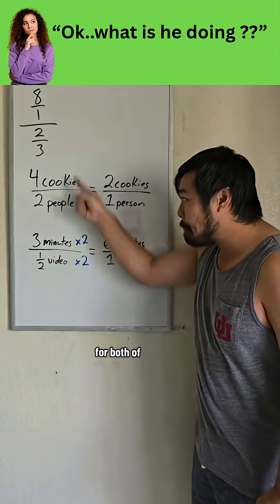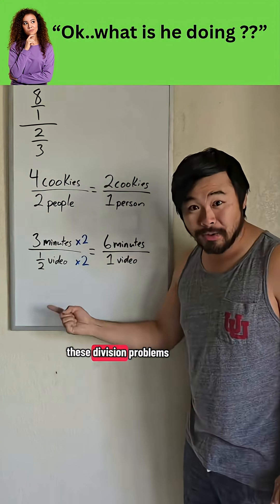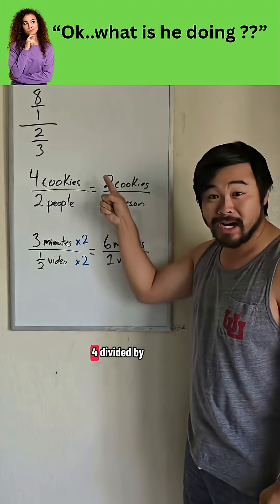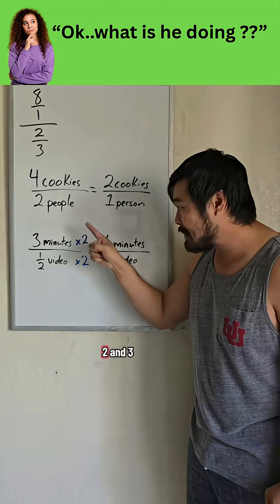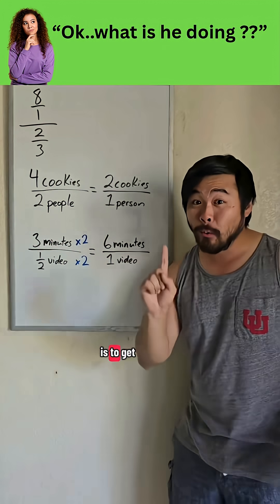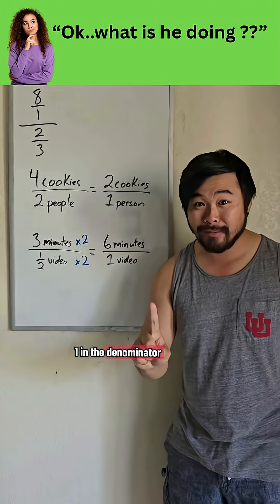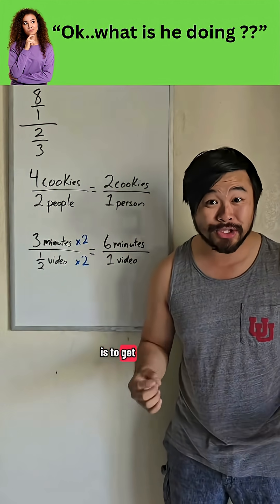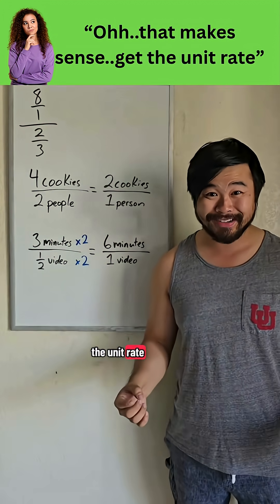So the goal for both of these division problems — four divided by two, and three divided by one half — is to get one in the denominator, because our goal is to get the unit rate.